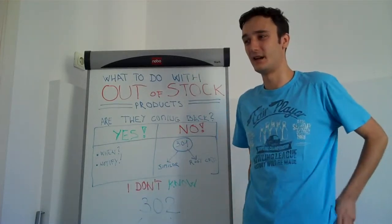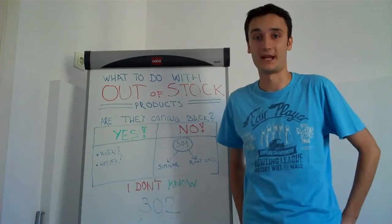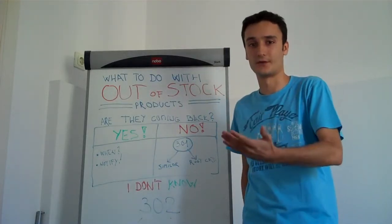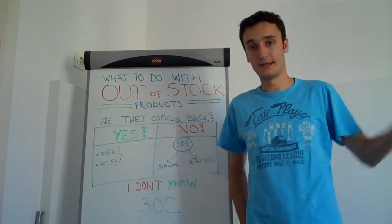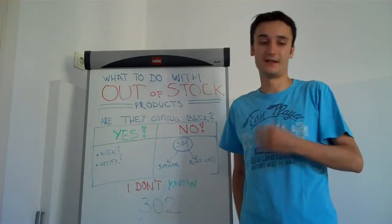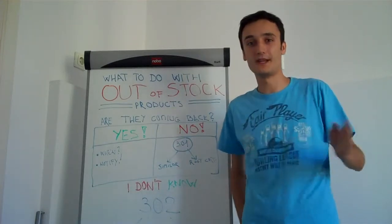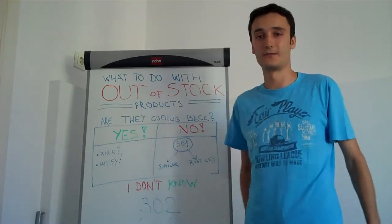But this out-of-stock product is actually a bad bounce, because a person comes to your website, sees that the product is out-of-stock, bounces right back to Google and then goes to your competitor. And it's a signal to Google that there's something wrong, because it repeats every time for each customer who comes.